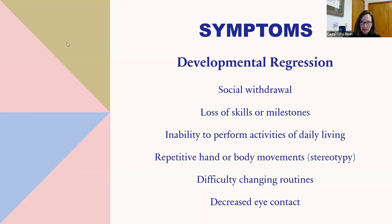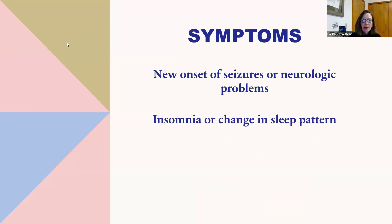Repetitive hand or body movements — called stereotypy — that are unusual can occur. There can be difficulty changing routines to the point that you can't get through daily activities, or the person won't leave their house, and decreased eye contact. There can be a new onset of seizures or neurologic problems, and there can be a big change in sleep, like staying up all night and sleeping all day, or not being able to get to sleep.